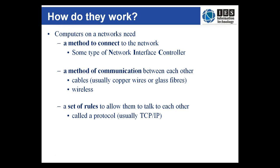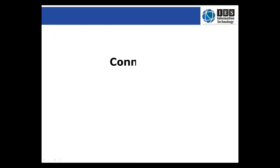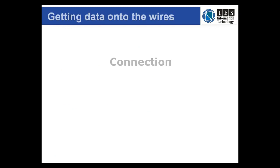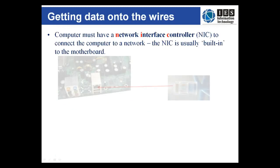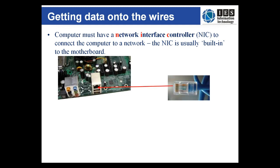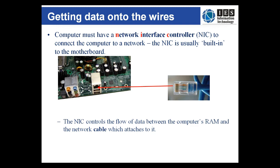Most desktop computers come with a NIC — a network interface card or controller — built into the motherboard. It's more than likely going to be a port that connects to a Category 5 unshielded twisted pair, known as Cat5 UTP. These are the cables that are commonly blue, and you see them sticking out of the wall in most computer labs. The NIC controls the flow of data between the CPU and RAM and the network cable which attaches to it.